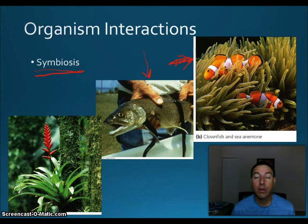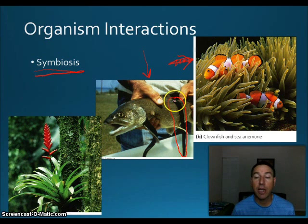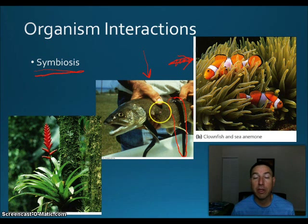The next type is parasitism, where one of the organisms is harmed. In this case, a fish is fed upon by lamprey — a jawless fish that bores a hole into the actual fish and sucks out its body fluids. Eventually the lamprey falls off, but the fish is left with damaging wounds and may not survive.